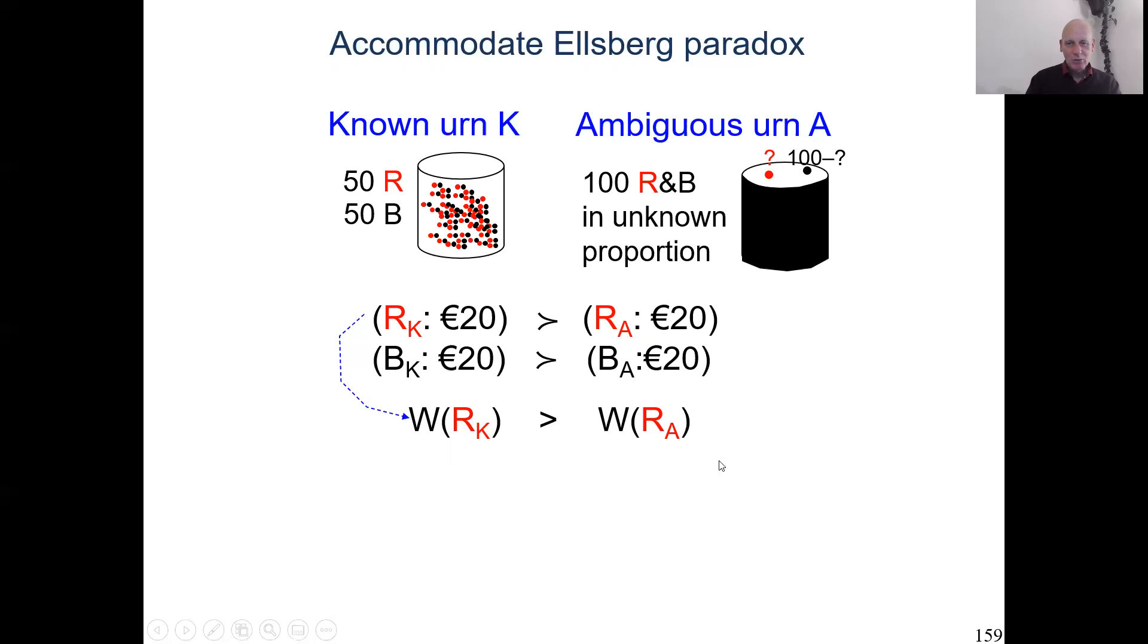But the utility of 20 euro drops. I didn't even write it. So I immediately get this inequality. For the black color, the same. Now we have this inequality in terms of the W function that follows.